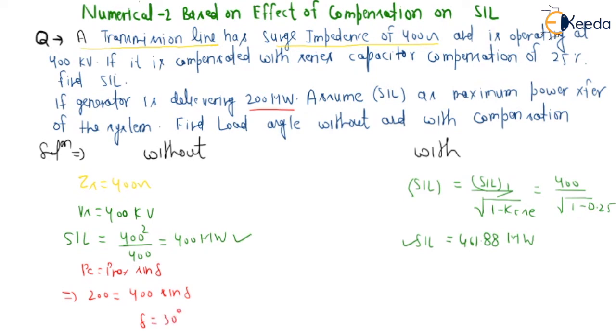In case of with compensation, 200 equals 461.88 sine delta. So delta here is coming as 25.465 degrees.